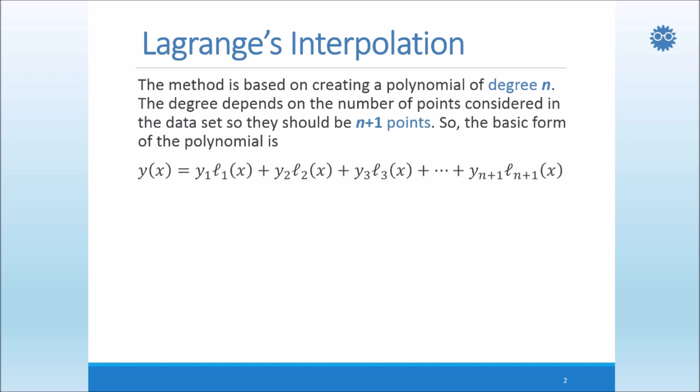The basic form of the polynomial, as we see here, is the sum of all values of y given in the dataset, from y1 up to yn plus 1, and the functions l1, as we'll see in the next slide, which are formed by the x values. Now, this form can be written in a concise way as a sum of yi li, where i equals 1 to n plus 1.